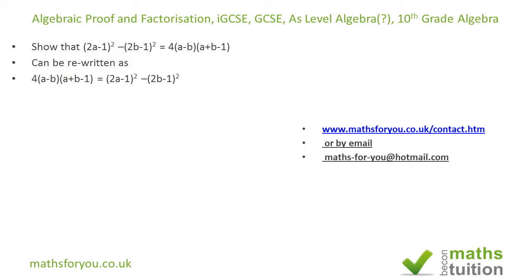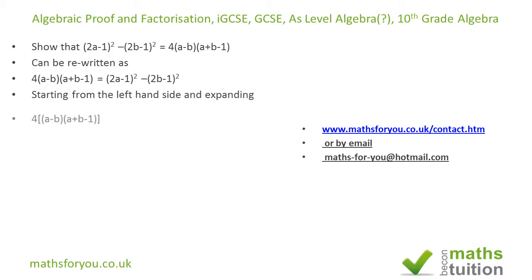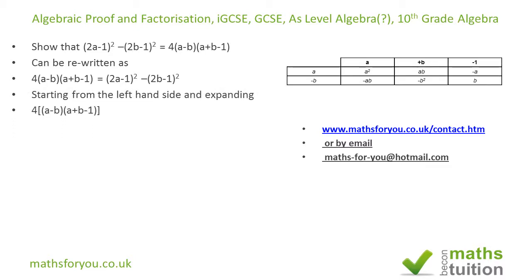I'm working on the right-hand side first, putting the 4 outside the bracket. My preferred method is to expand in columns so I don't miss anything out. So that's (a - b) and (a + b - 1). When I multiply out in columns I get all the terms, and the ab terms cancel out.